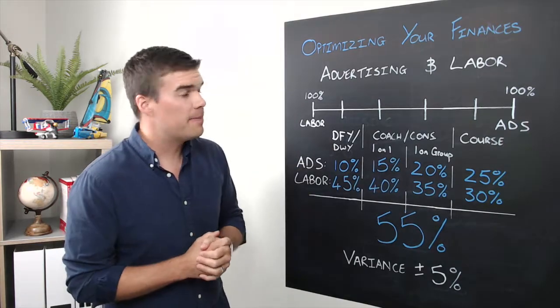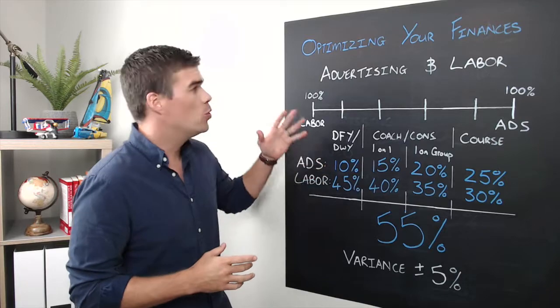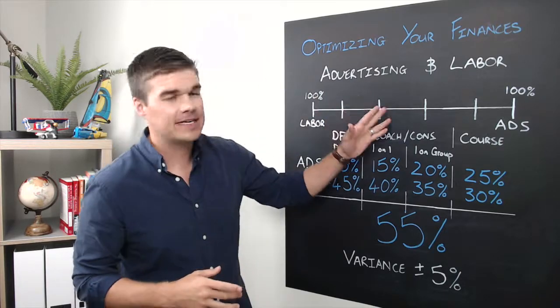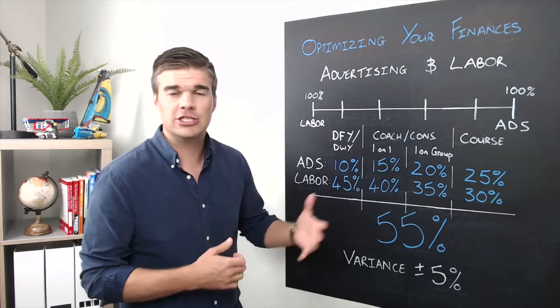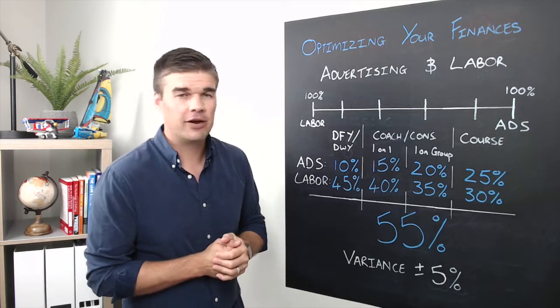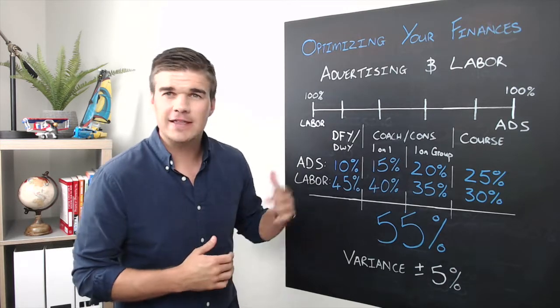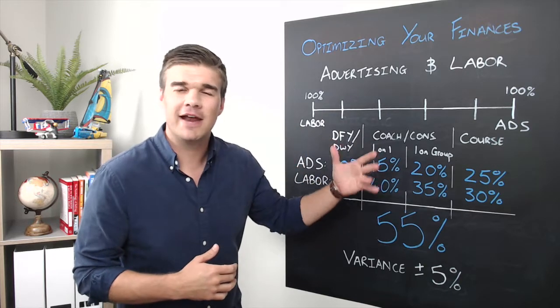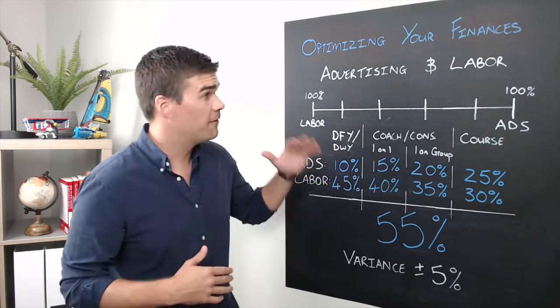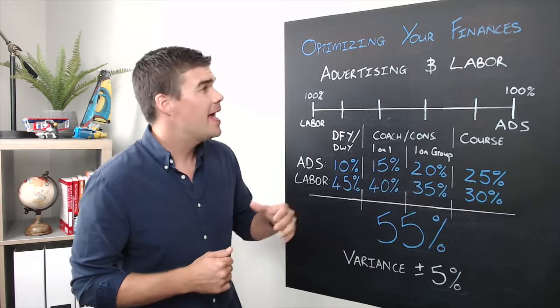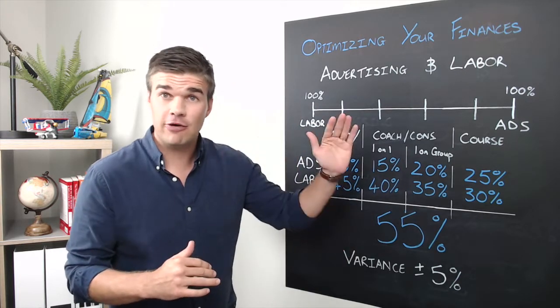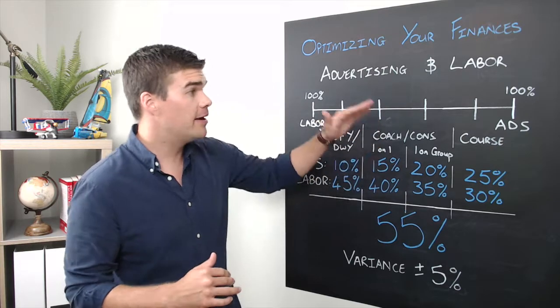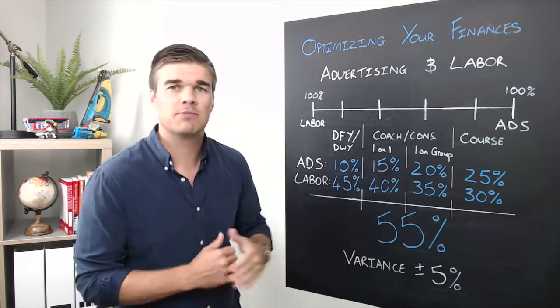So I'm going to dive into this and break down for you exactly how we go about managing advertising and labor, ensuring that we are as efficient as possible and generating the profits that we need to be generating. It's also important to note that this is about optimizing your finances. I'm going to use an example of $50,000 of revenue, and in this case we are not trying to grow revenue. We are just trying to maintain revenue at $50,000 and ensure that we are running as optimally as possible.